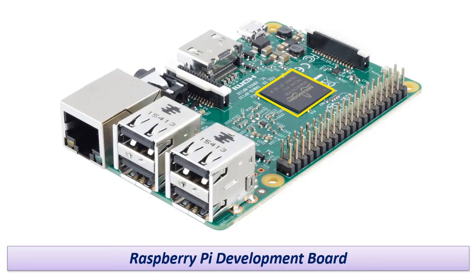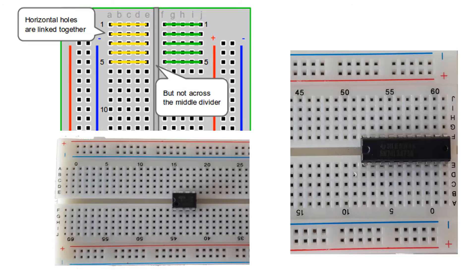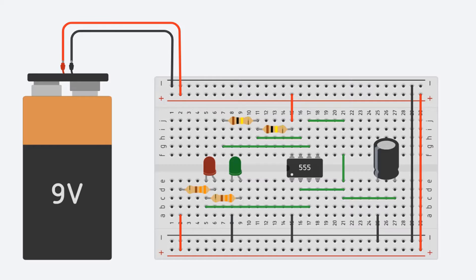When integrated circuits are to be used on the breadboard, they are inserted right in the middle. Thus, any of the pins can be used separately without short-circuiting. For example, here you see a simple circuit built on a breadboard with a 555 timer IC.